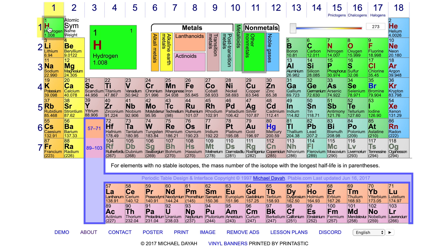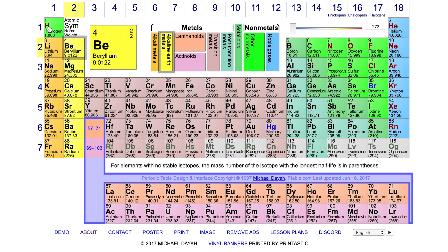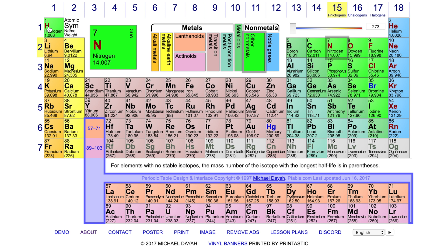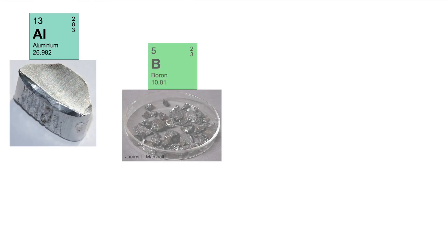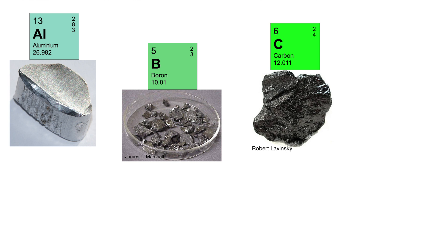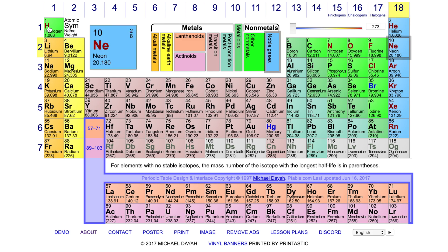In it, elements are organized by their atomic number, which is given by the number of protons an atom of that element has. Recall that an element is a substance that cannot be broken down into simpler substances, chemically or physically. An atom is the smallest unit of matter that retains the essential properties of an element.